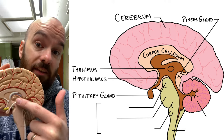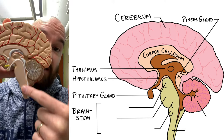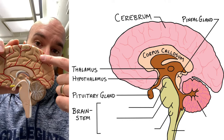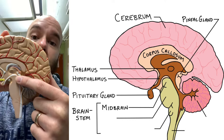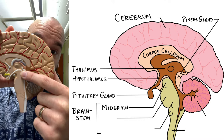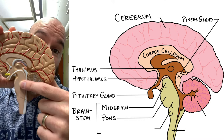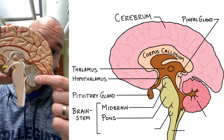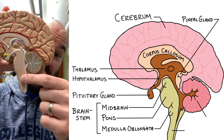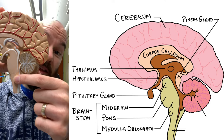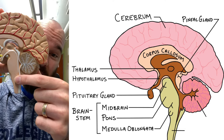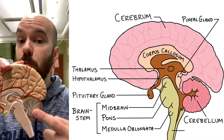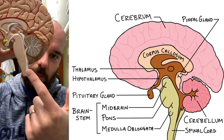Those four structures make up the diencephalon. Inferior to that, we have the brainstem, which is a pathway for signals to travel from the spinal cord up to the rest of the brain. The brainstem has three parts: the midbrain at the top, which controls auditory and visual reflexes; the pons, which is a connection between sensory and motor signals and the cerebellum, coordinating those movements; and finally the medulla oblongata, the cardiac center of the brain, which regulates our heart rate, the constriction and dilation of our blood vessels, and our breathing. We also have the cerebellum, which coordinates your movements and helps with balance and posture, and finally the spinal cord at the bottom.